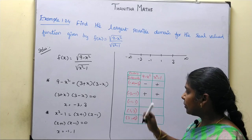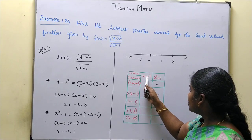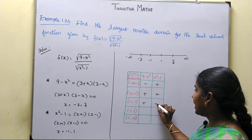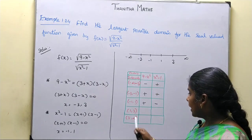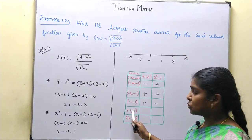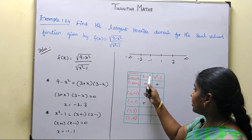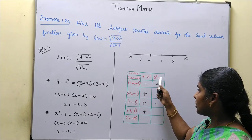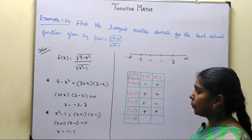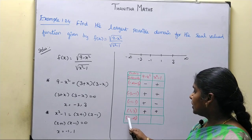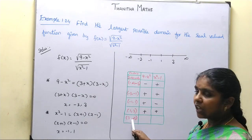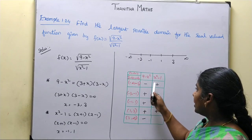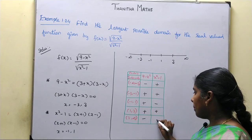For interval (-1, 1), substitute x = 0: 9 - 0 = positive, but 0 - 1 = -1, negative. For interval (1, 3), substitute x = 2: 9 - 4 = positive; 4 - 1 = positive. For interval (3, ∞), substitute x = 4: 9 - 16 = negative; 16 - 1 = positive.